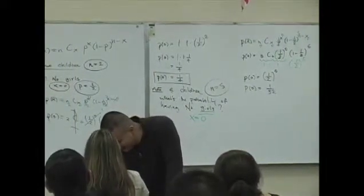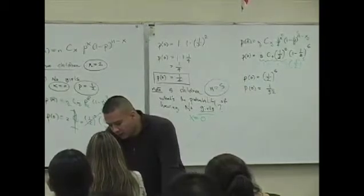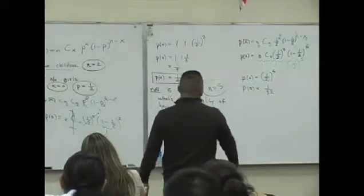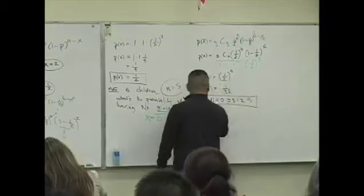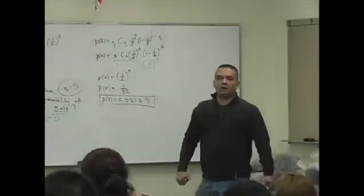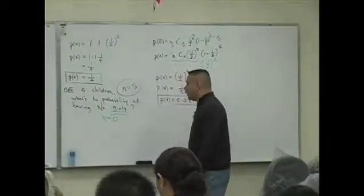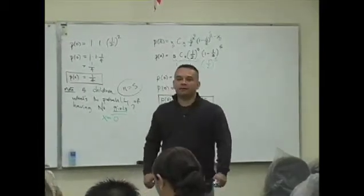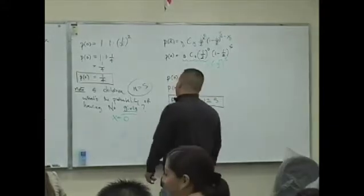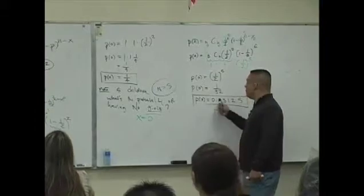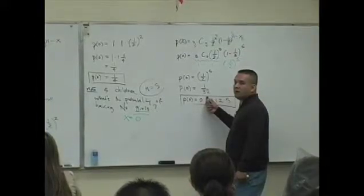You guys okay with this? This is an illustration of the binomial probability distribution formula. Having children is a good setting to start discussion of the binomial. But here's my point - do you guys know that there's 32 outcomes, 32 different gender sequences when you have 5 children? What's a gender sequence?